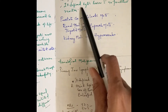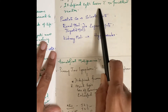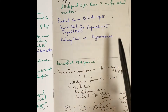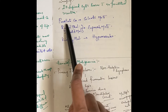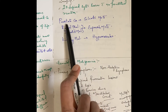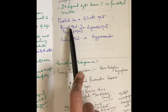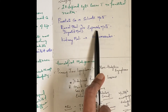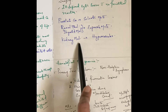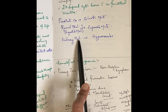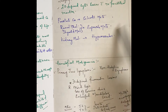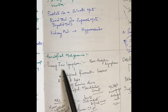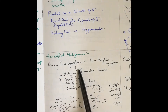Metastases present as ill-defined lytic lesions with no periosteal reaction. If the primary is from prostate, there will be sclerotic metastasis. If from kidney or thyroid, there will be expansile metastasis; renal metastases are also hypervascular.